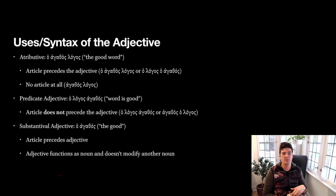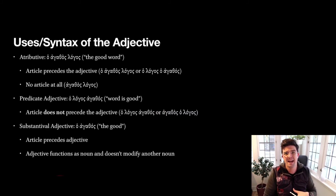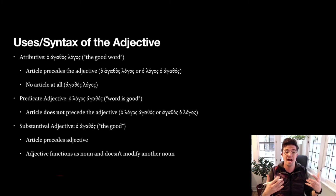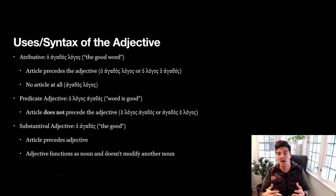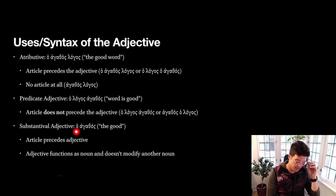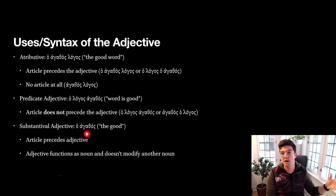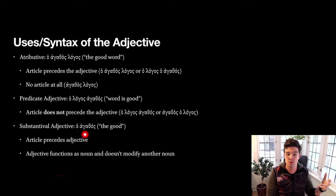The last use of the adjective is the substantival adjective. The substantival adjective always has a definite article before it and does not have a separate noun associated with it. In this case, the adjective is functioning as the noun itself. The example is ho agathos — 'the good one.' Because it is in the nominative, 'the good one' functions as the subject of the sentence. There is no different noun serving as subject; the good one itself is the subject.